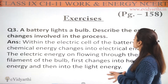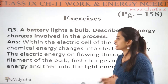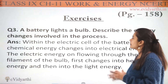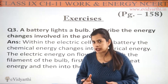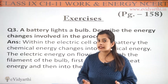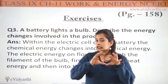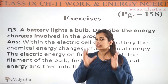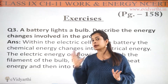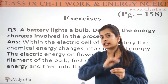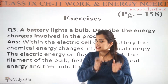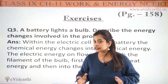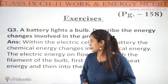A battery lights a bulb — let's talk about the energy changes involved in the whole process. There is a battery lighting a bulb, so we can imagine a torch, or you can understand that a bulb is connected with a small battery. Let's talk about the whole energy transformation starting from the battery to the lighting of the bulb. What are the transformations? Let's see now.